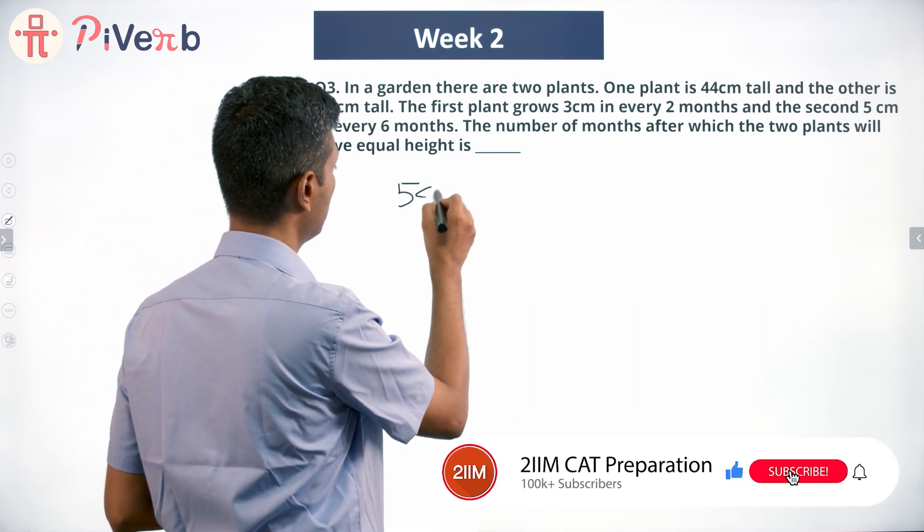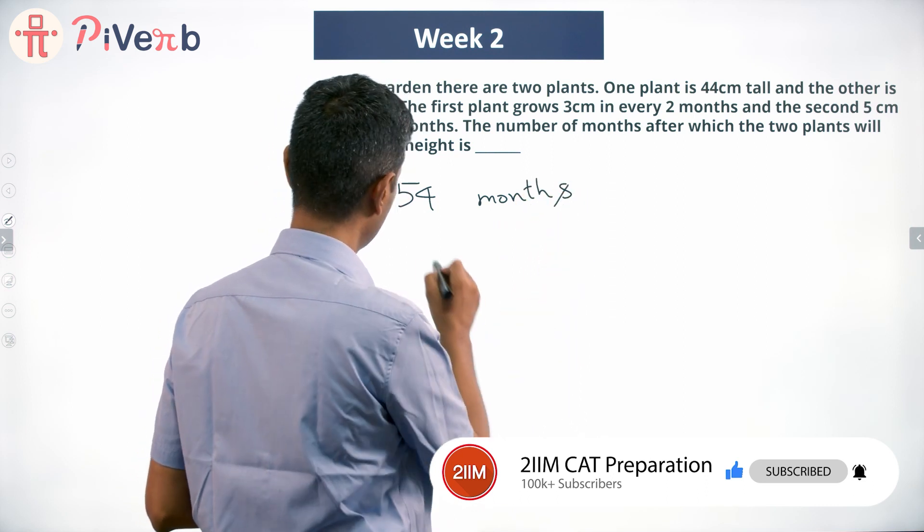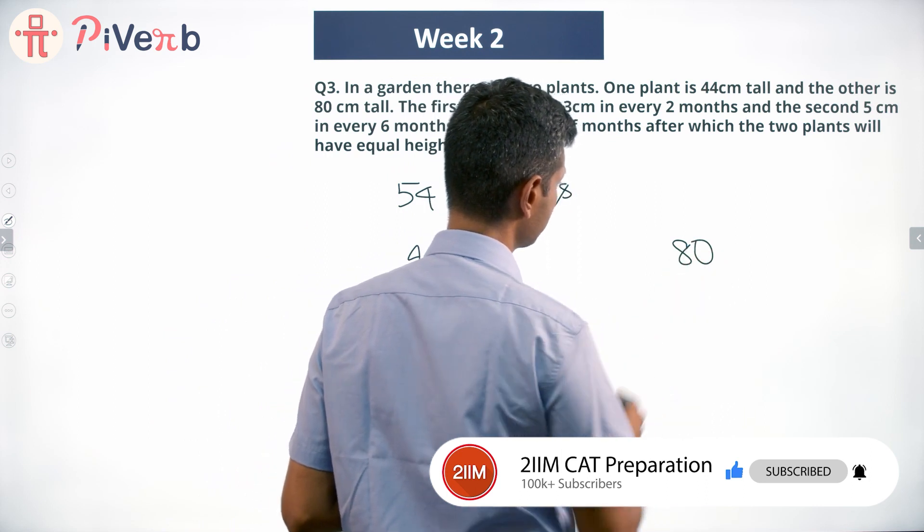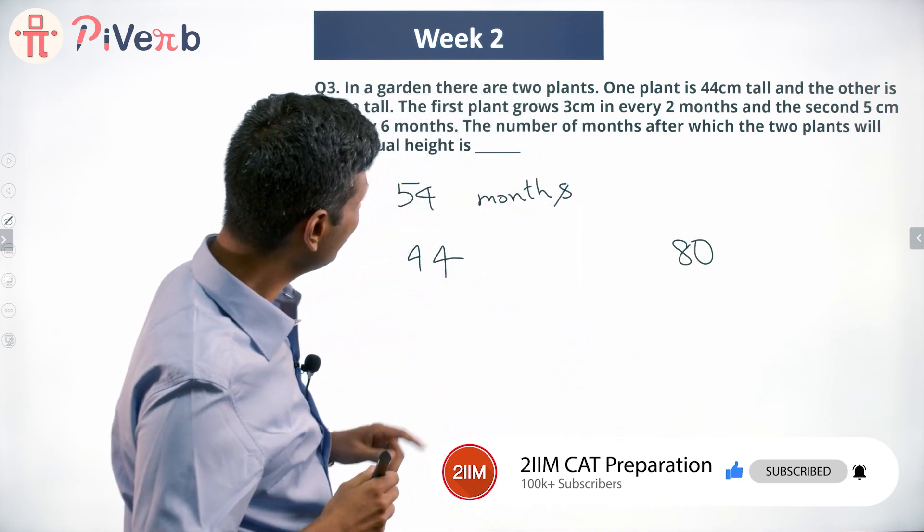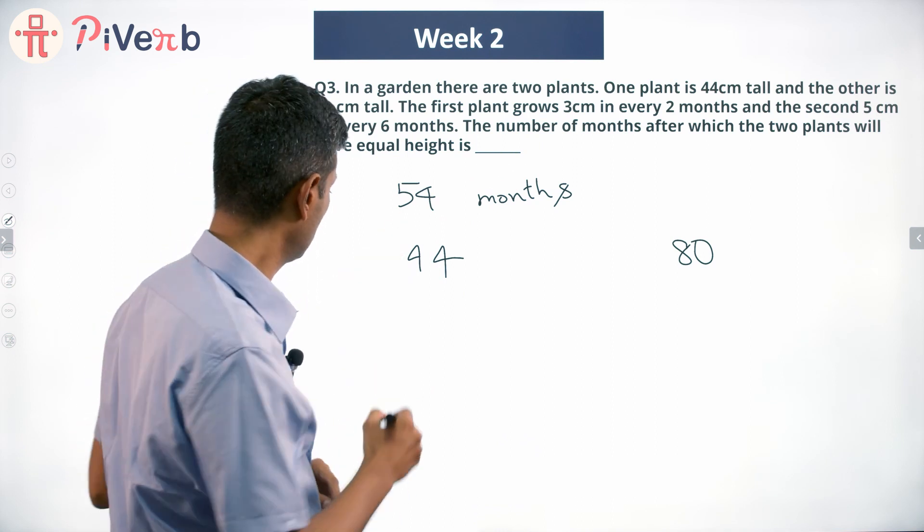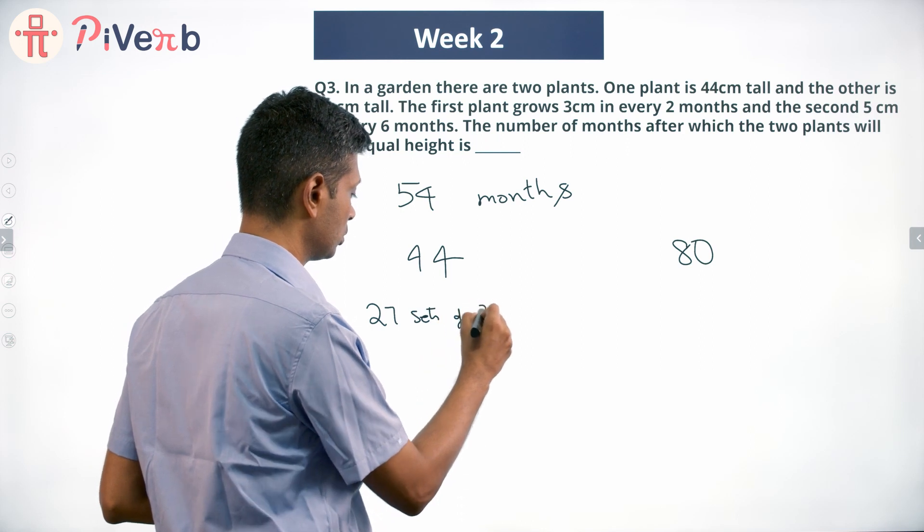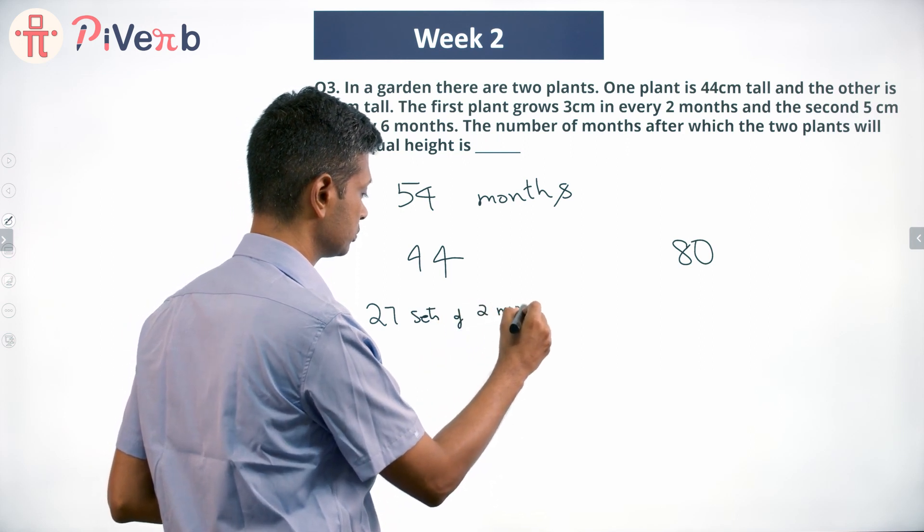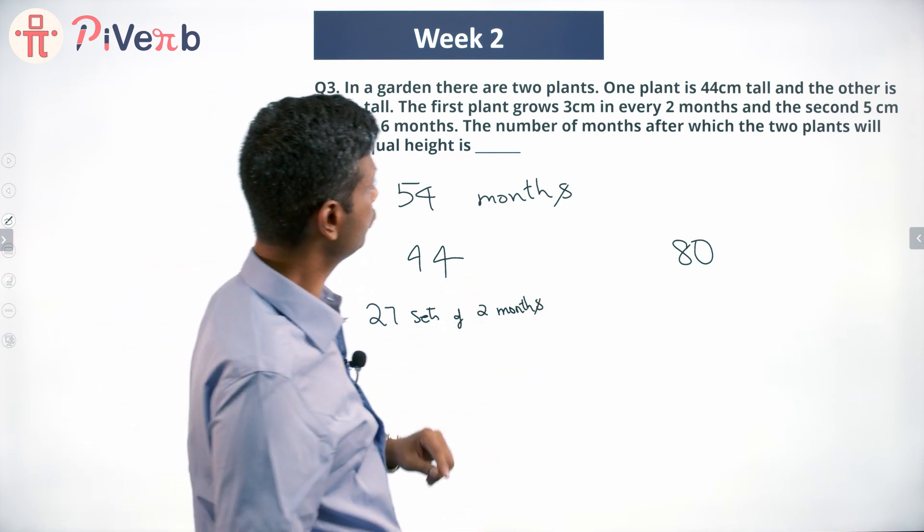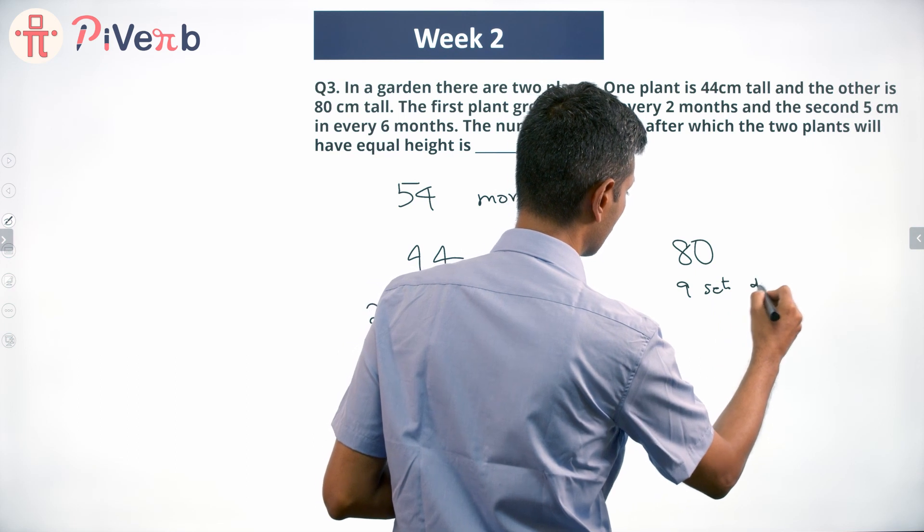54 months is our answer. Let me cross check this. One plant starts at 44, another plant starts at 80. Every 2 months this grows 3 centimeters, so this is 54 months, or 27 sets of 2 months. This grows - 54 centimeters, or 9 sets of 6 months.